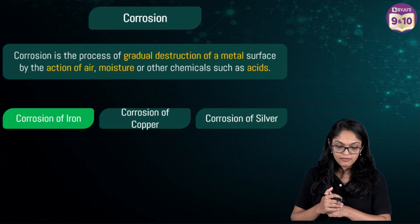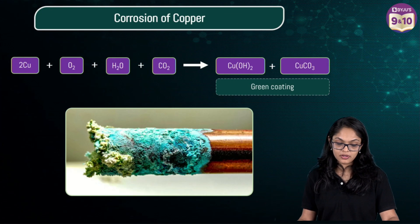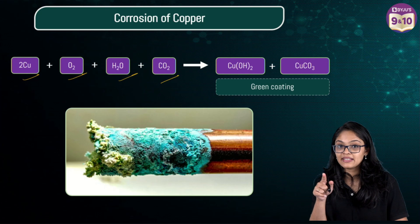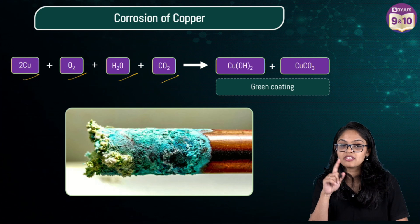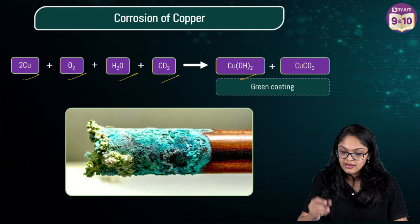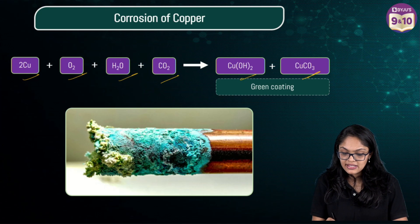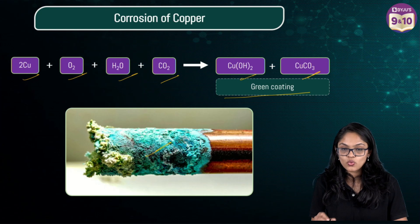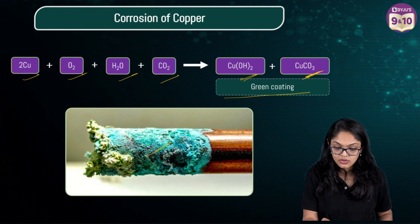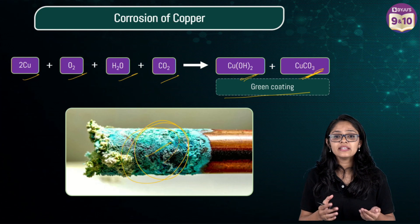Now, corrosion of copper. Copper reacts with oxygen, water, and carbon dioxide to give copper hydroxide plus copper carbonate — the green coating that you see. Cu(OH)₂ and CuCO₃ are the two products forming here. This green coating is the corrosion of copper.